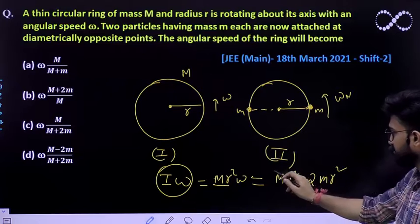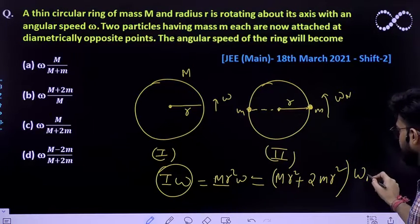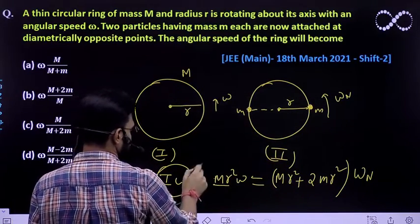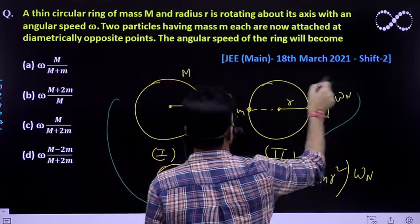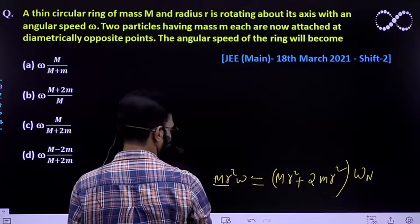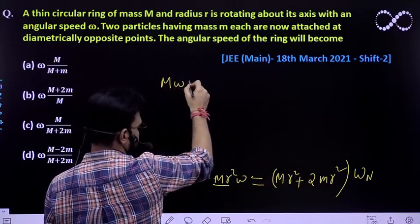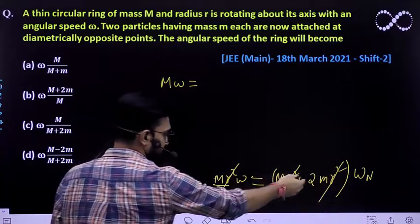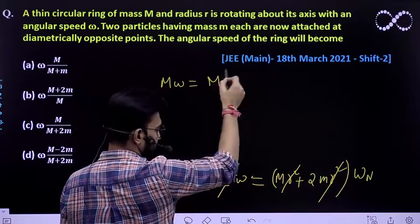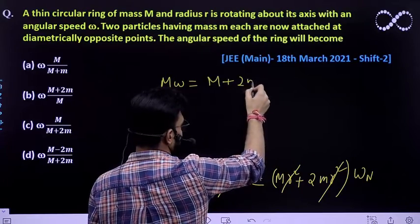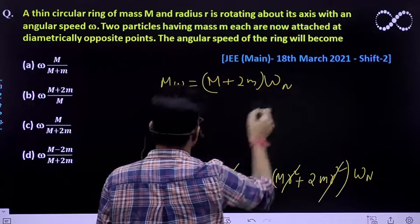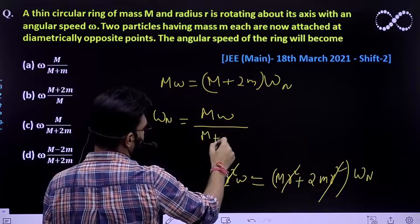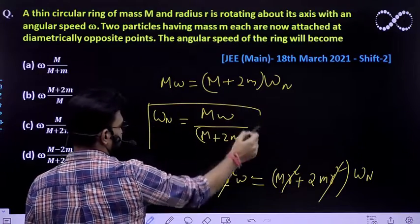This moment of inertia is multiplied by omega new. Taking R square common, M omega equals - R square cancels out - so we get M omega equals M plus twice of m times omega new. So omega new, the new angular speed, would be equal to M omega divided by M plus 2m.